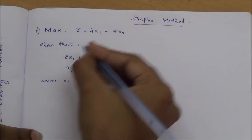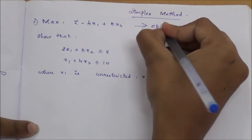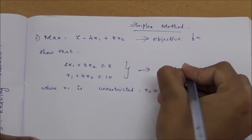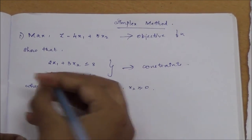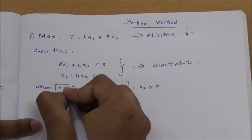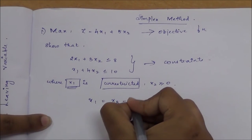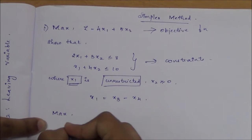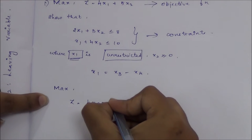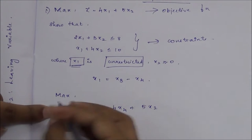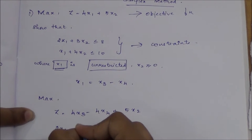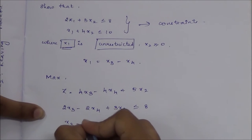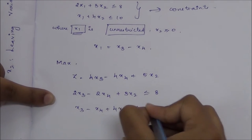Let us solve an example for the simplex method. This is the problem with the objective function and two constraints. Since x1 is unrestricted in this problem, we substitute two new variables: x1 = x3 minus x4. Substituting this, the objective function becomes 4x3 minus 4x4 plus 5x2, and the constraints become 2x3 minus 2x4 plus 3x2 ≤ 8 and x3 minus x4 plus 4x2 ≤ 10.